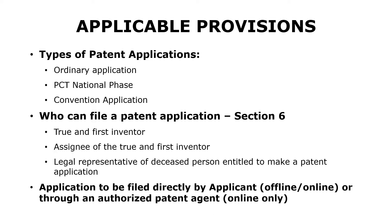Coming first to the types of patent applications that could be filed in India, there are three types. One is the ordinary application, which is the first application that you file in India. So if you have developed an invention and want to file a patent application for the first time in India, that is called the ordinary patent application. Then there is a PCT national phase application, wherein there is a PCT international application and you have designated India as one of the offices where you want to secure protection, and thus you enter the PCT national phase in India.